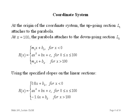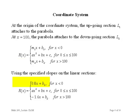Since this is just one roller coaster, we describe it as one piecewise function R(x) with three pieces: the linear piece going up, the parabola, and the linear piece going down. When x equals 0, the linear section turns into the parabolic section, so for x less than 0, the roller coaster is described by the first linear equation. At x equals 100, the parabolic section turns into the second linear section. The parabola sits in the middle, valid between x equals 0 and x equals 100.